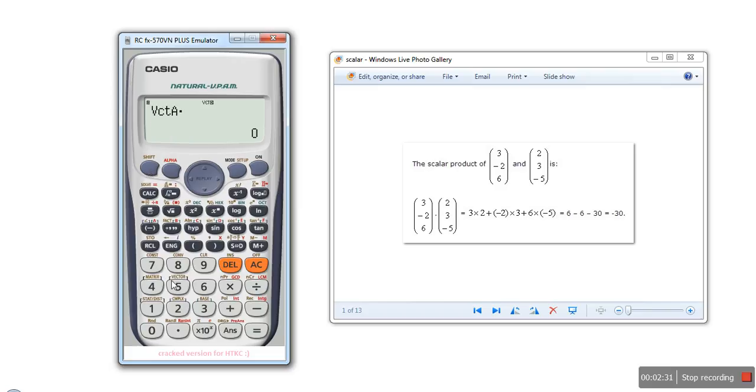We will again go to menu. Now we will select vector b. Press equal sign. It is showing minus 30, which is equal to this one. This is the way you can perform dot product on vectors.